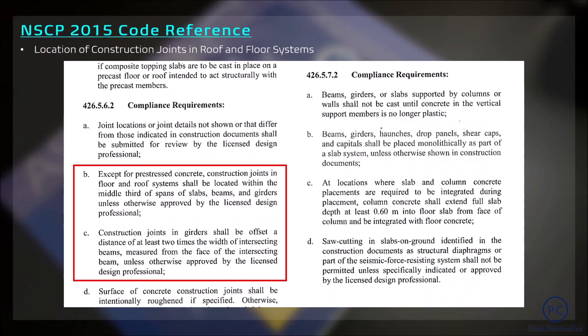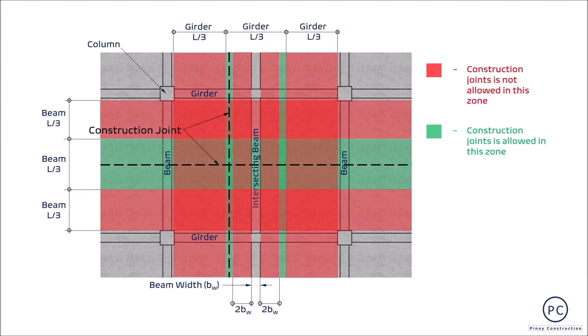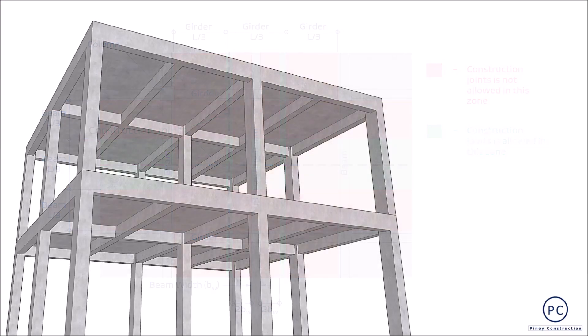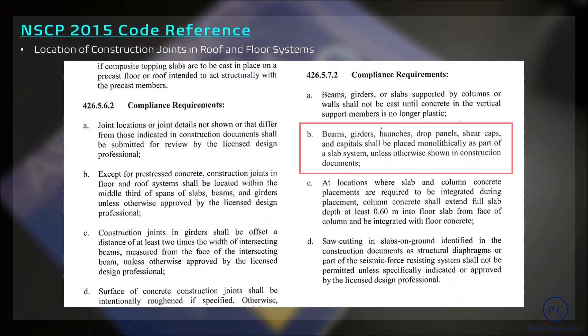Ito ang basis ng section 426.5.6.2 ng NSCP 2015 regarding sa transfer of shear requirements and location of construction joints sa floor and roof systems. Although allowed na magputol ng buhos sa floor system according to structural code, ang recommended practice ay gawing buo ang buhos o yung tinatawag na monolithic concrete pouring. Ibig sabihin, walang construction joints sa floor system, o di kaya naman ay unahin muna ang mga beams na buhusan at kapag tumigas na ay saka bubuhusan ng suspended slab. Ang ganitong method ay hindi nararapat gawin sa construction, at ito ay clearly stated sa section na ito.